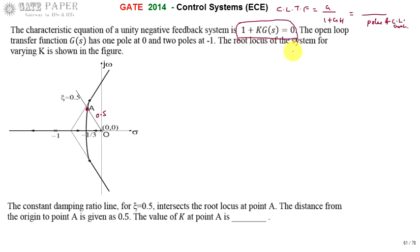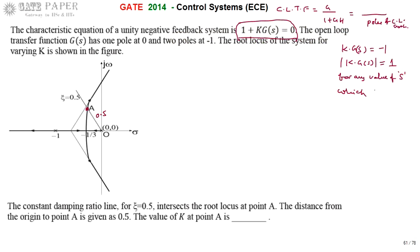If s is on the root locus, then K·G(s) equals minus 1, and the magnitude of K·G(s) equals 1. This magnitude condition holds for any value of s on the root locus. Since point A is on the root locus, the magnitude of K·G(s) evaluated at s = A also satisfies this equation.